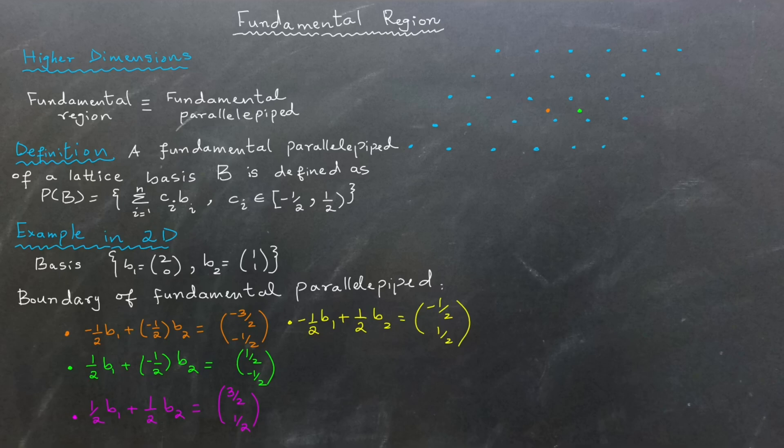Once we have the fundamental region, we apply the same shifting process described earlier. By adding a lattice point to each point in the region, we move the region around the lattice, eventually covering the entire space without gaps or overlaps.